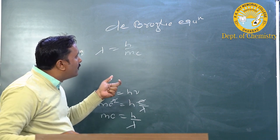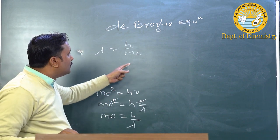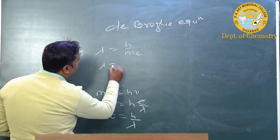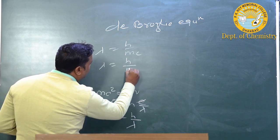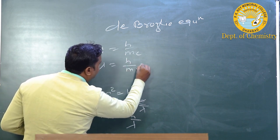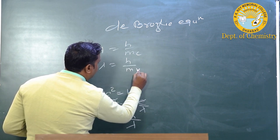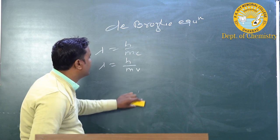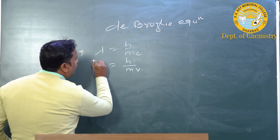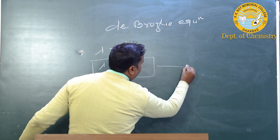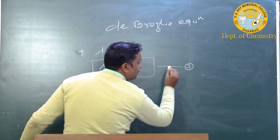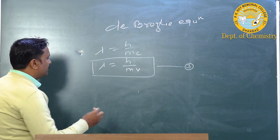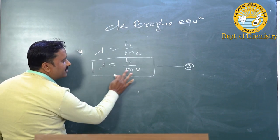Since de Broglie extended this to particle nature, C is replaced by V (the velocity of the particle). So it becomes λ = h/mv. This is actually called the de Broglie equation.